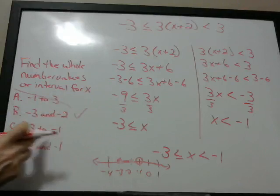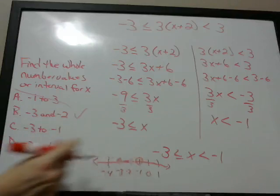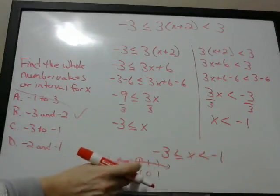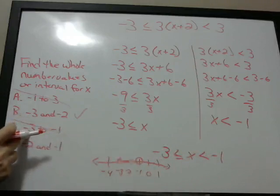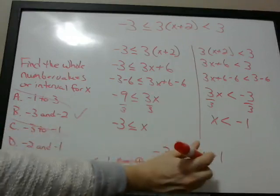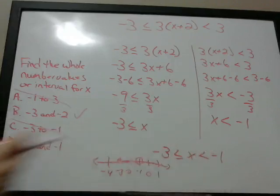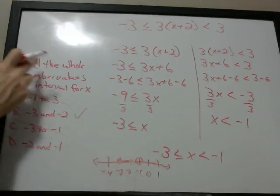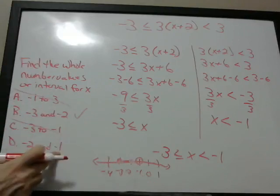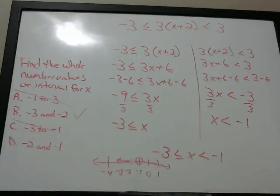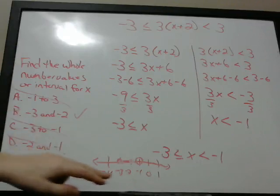Choice C is negative 3 to negative 1, meaning the interval negative 3 to negative 1. But because it can't equal negative 1 — it's less than negative 1 — this is not the right answer either, because it's saying that it can equal negative 1, and it can't. That would only be correct if it were a less-than-or-equal-to sign, but it's not. Choice D is negative 2 and negative 1 as the two whole number values. Well, negative 2 is right, but negative 1 doesn't satisfy this because negative 1 is not less than negative 1, it's equal to negative 1. So the correct answer is negative 3 and negative 2.